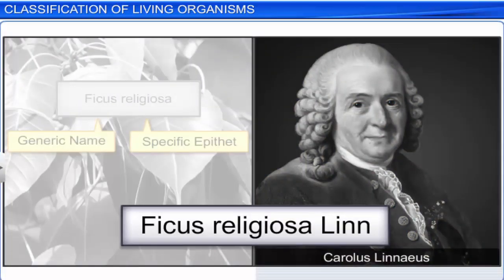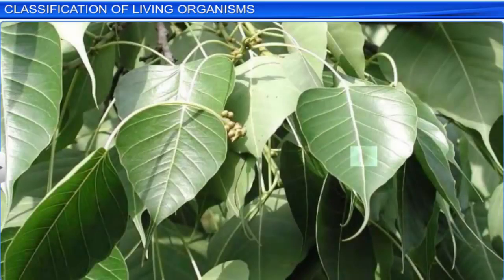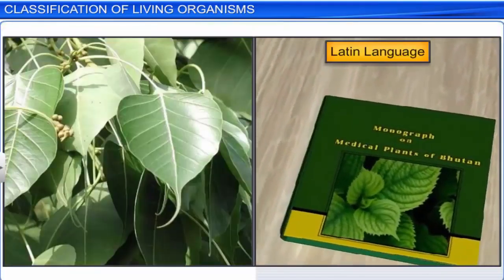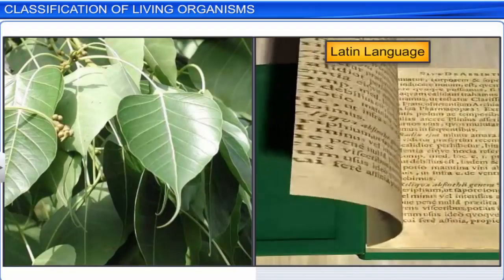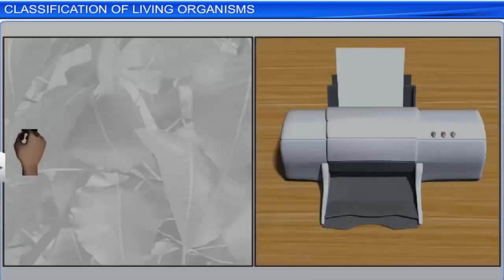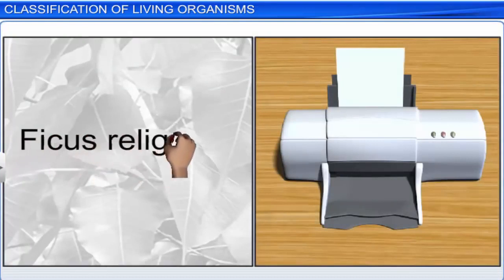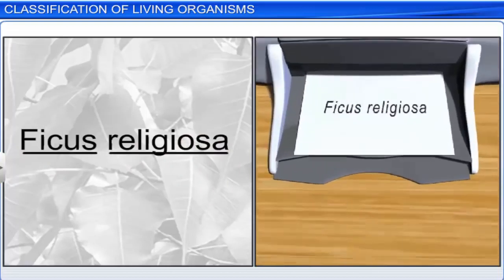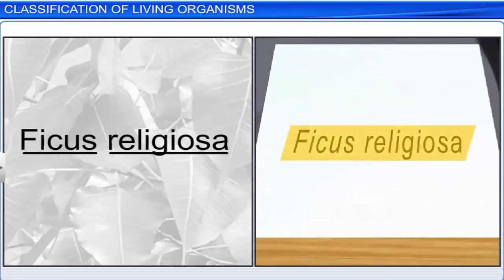Sometimes the name of the author who first described the species is written at the end of the specific epithet. For example, in Ficus religiosa Lin, Lin is the abbreviated name for Linnaeus. Moreover, scientific or biological names are generally in Latin or derived from Latin, irrespective of the origin of the organism. Also, when a scientific name is handwritten, both the words and the name are underlined separately, whereas when printed, it is in italics to indicate its Latin origin.